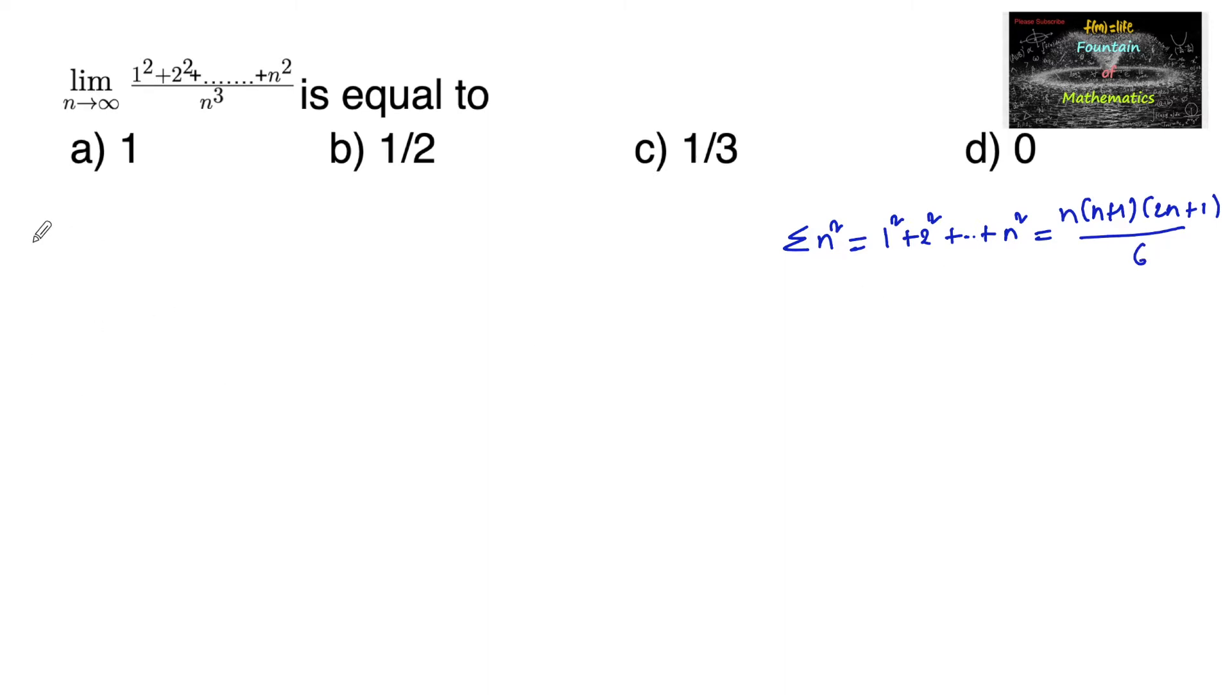So let us apply this. Limit n tends to infinity, sum of squares of first n natural numbers we can write it as n into n plus 1 into 2n plus 1 upon 6, and the denominator is n power 3.